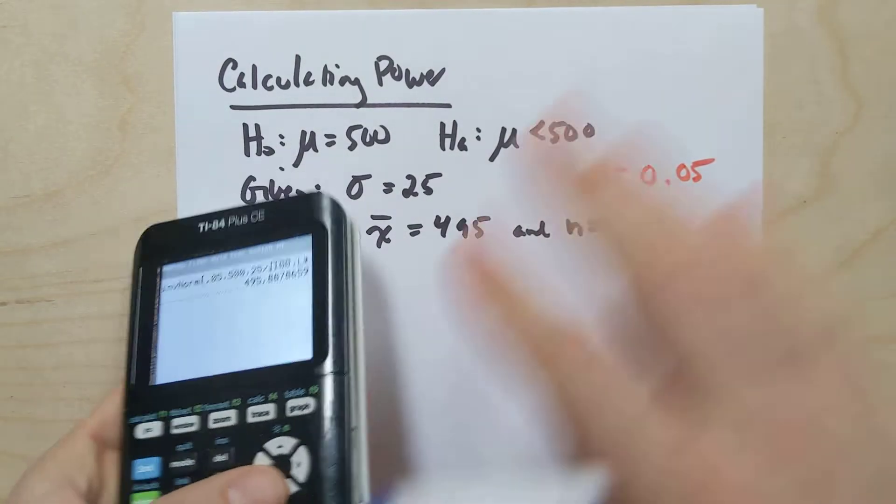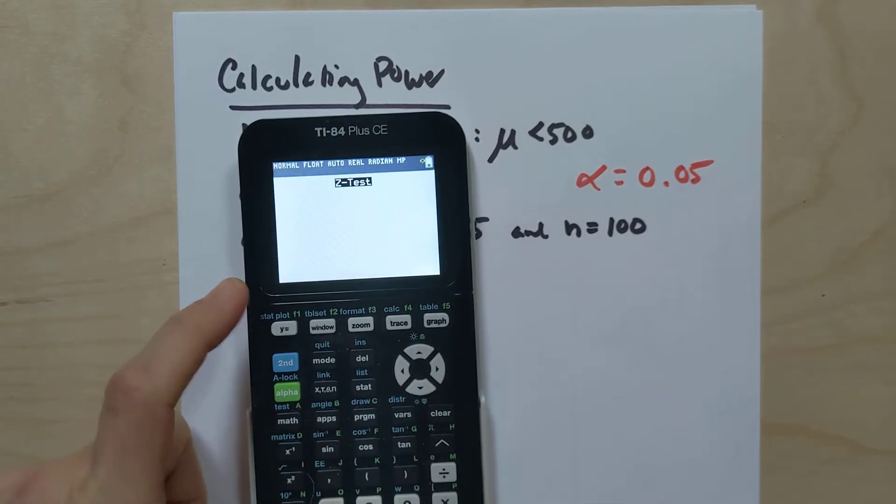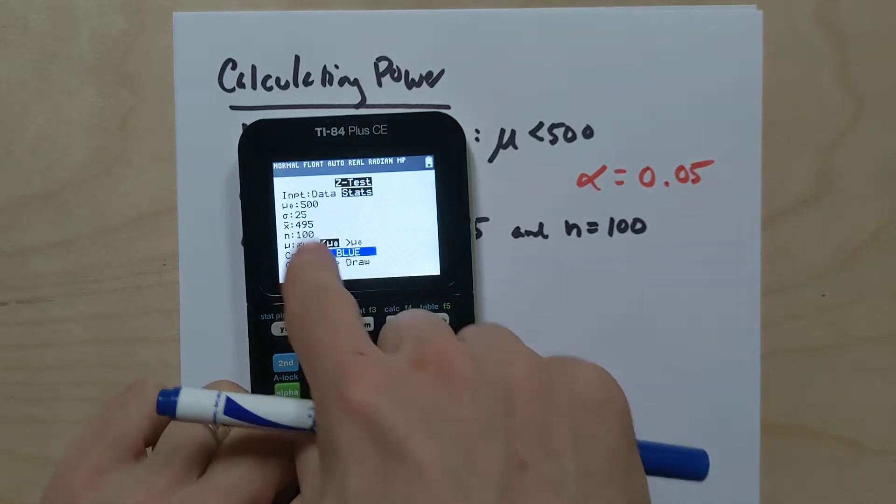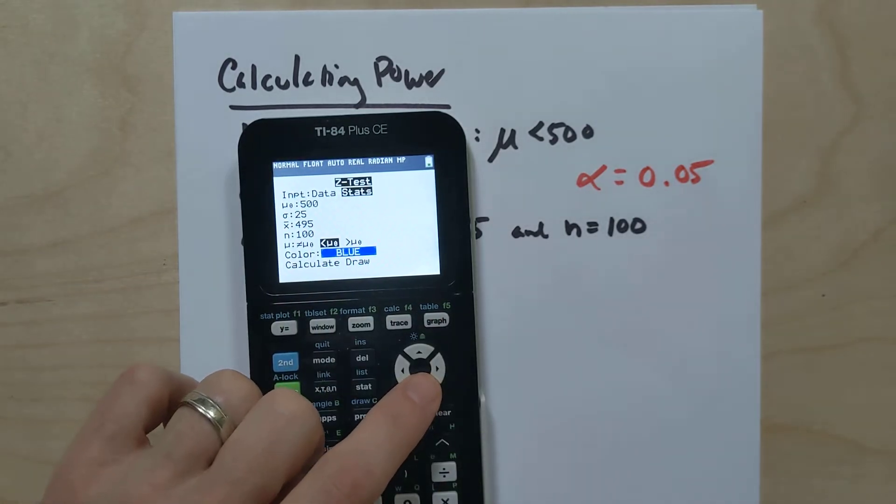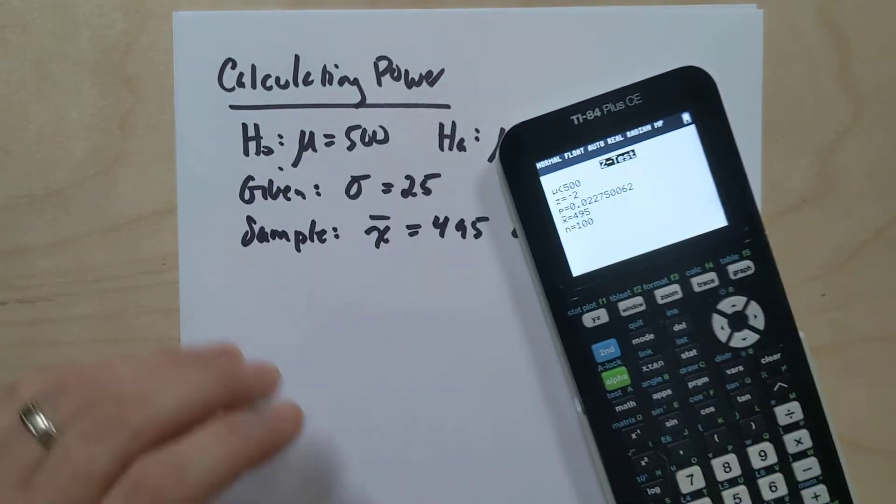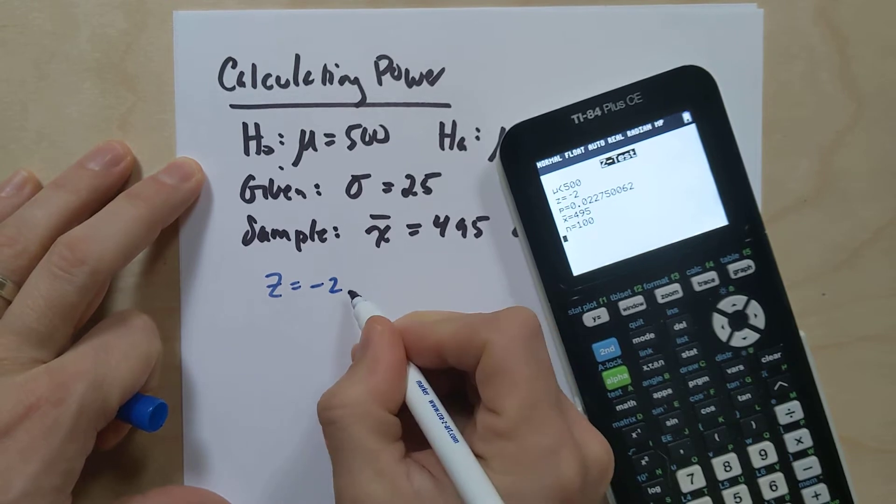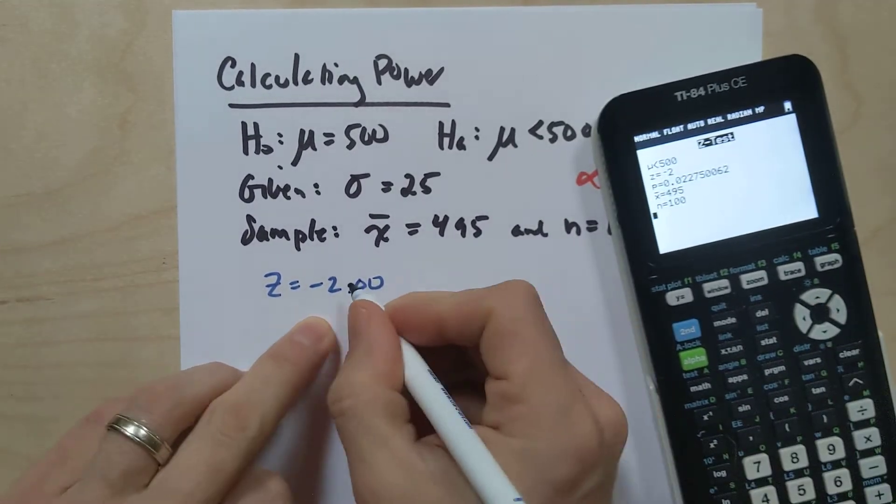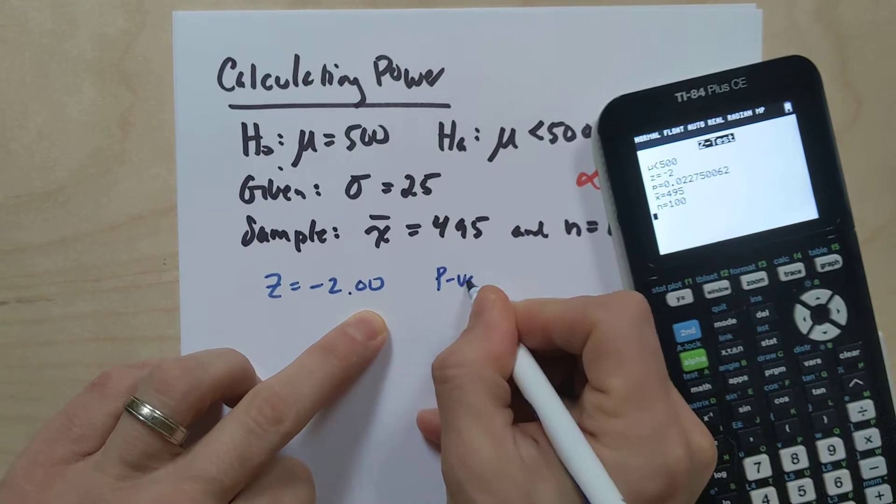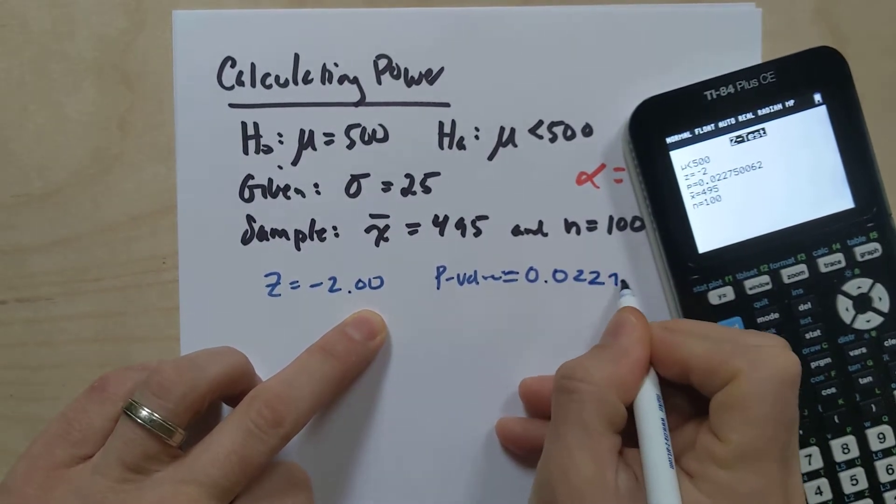So if we were to do the test, say this meets all the conditions of inference and all that junk, we can go over here to test, we can go to z-test, and we've got null hypothesis of 500, standard deviation at 25, sample mean of 495, sample size of 100, it's a left tail test, let's calculate, and shazam. We got a test statistic that comes out to exactly negative 2, and that almost never happens. This is clearly probably some kind of contrived example. Negative 2, and then the p-value is 0.02275.